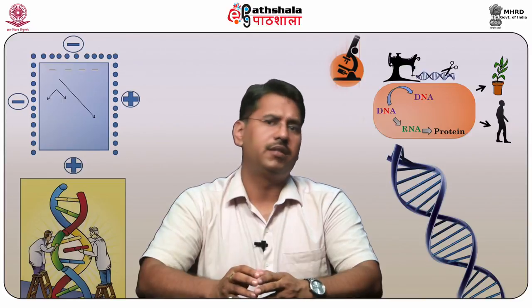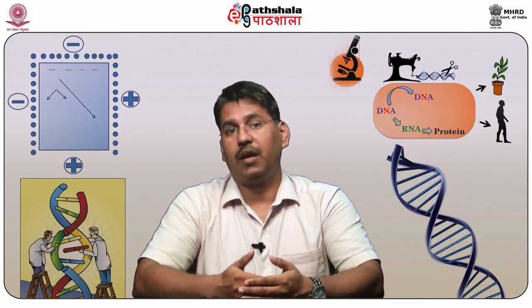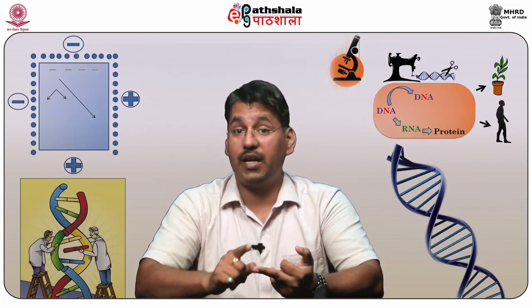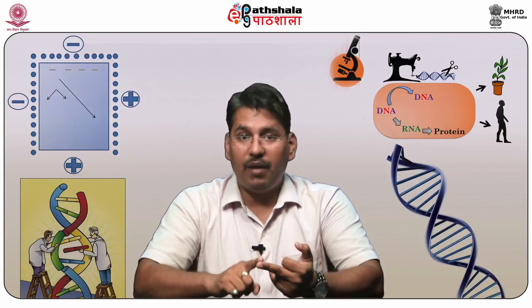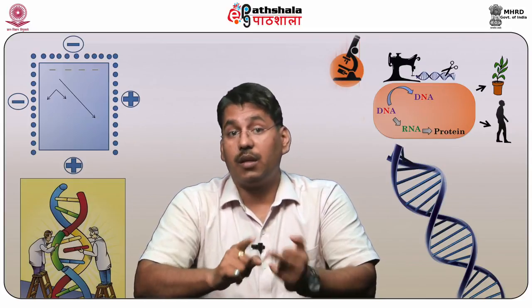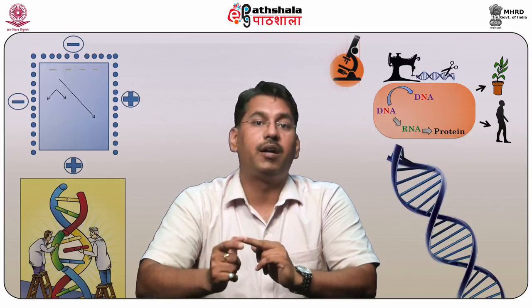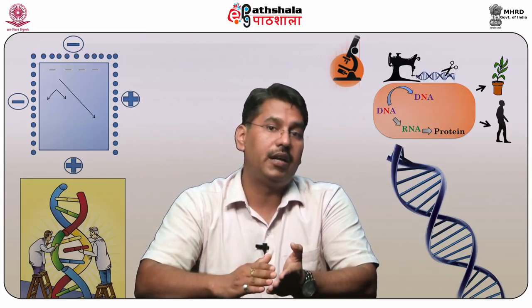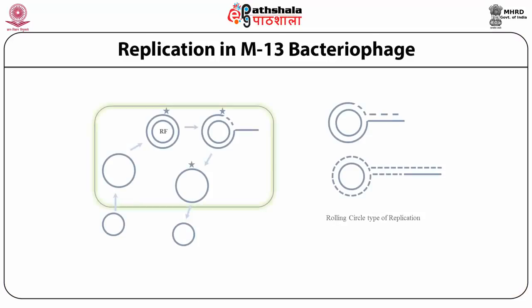In M13 bacteriophage, DNA is replicated by the rolling circle mechanism. In this mechanism, one strand is nicked and the free 3' OH is extended by DNA polymerase III. The 3' end on the circle is extended while the growing point rolls around the circle template. The 5' end is displaced and forms a tail of single-stranded DNA. The single-stranded tail is converted into double-stranded DNA by synthesis involving RNA primers. Rolling circle DNA replication is initiated by an initiator protein encoded by the bacteriophage DNA, which nicks one strand of the double-stranded circular DNA at a site called the double-strand origin, or DSO.